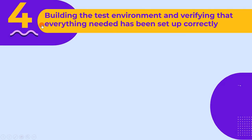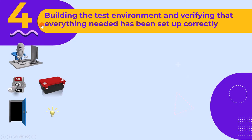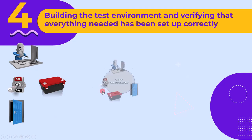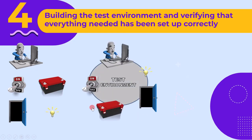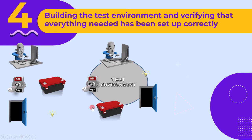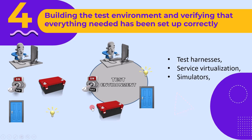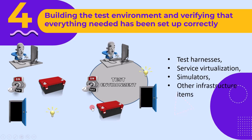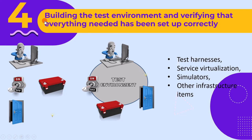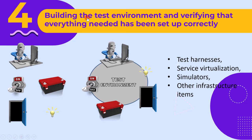The fourth activity is building the test environment and verifying that everything needed has been set up correctly. In the test design stage, we identified the test environment infrastructure. In the test implementation stage, we make the test setup ready for execution and verify it. The test environment may include test harnesses, service virtualization, simulators, and other infrastructure items.